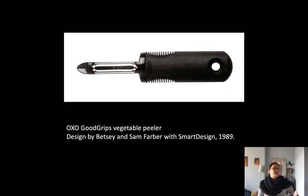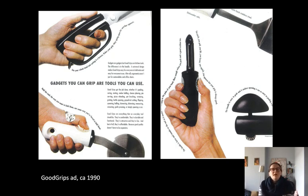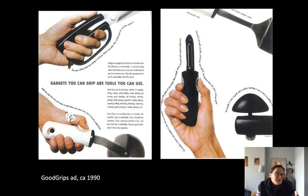Even the name OXO can be read upside down and backwards; you can use left or right hand. Similar to the Cuisinart, everything about OXO Good Grips presents itself as elegant, top-of-the-line, and highly functional rather than something explicitly associated with disability. The first OXO Good Grips ad says 'gadgets you can grip are tools you can use,' focusing on usability without specific reference to arthritis. The ad shows both male and female hands, even a hand with a bandaid, and small text says 'hold the tools the way you want to hold them, not some way you're forced to hold them.'